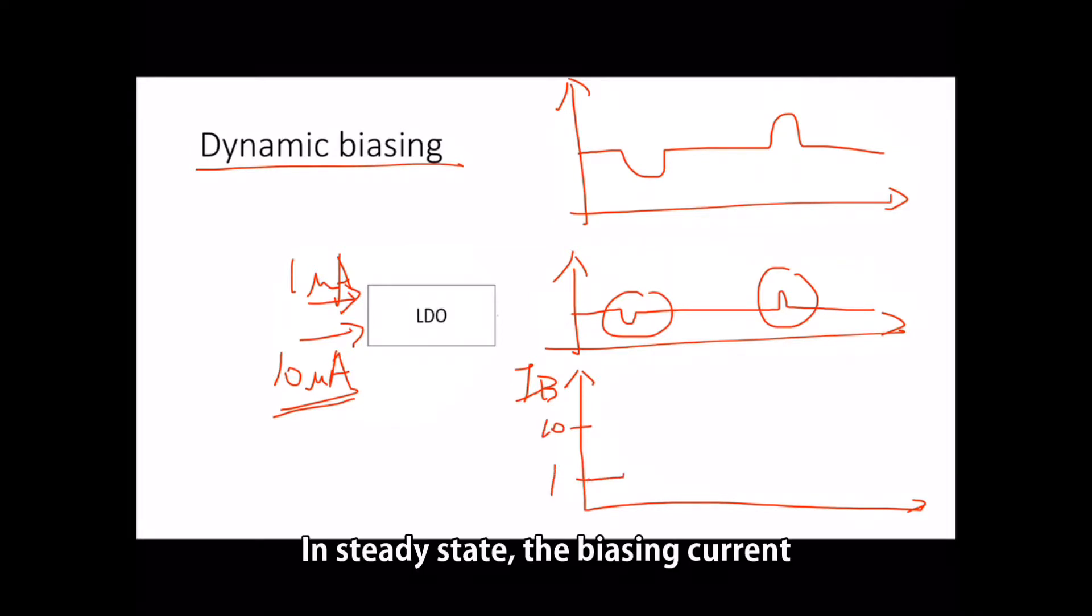In steady state, the bias current is only 1 microampere. At transient instant, it will increase to 10 microampere, and it will back to 1 microampere in steady state.